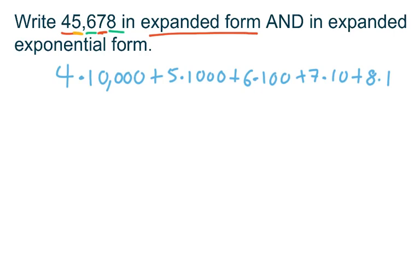One, you may remember, is ten to the zero. Whereas ten is ten to the one. And a hundred is ten squared. And so you can see as you go from right to left, which is going backwards, you'll see that those exponents increase.